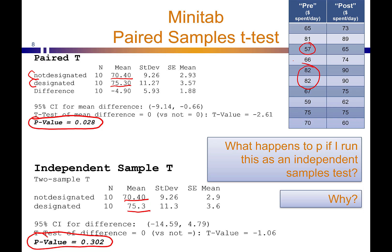With a paired t-test, because you're taking the differences — for example, $57 to $65 is an $8 change, $82 to $90 is another $8 change, $70 to $60 is a minus $10 change — the only variability you're incorporating is the change from being a non-super shopper to a super shopper. The variability between individuals spending in the $80 range versus the $60 range is isolated away and not part of your test statistic. Therefore you have a stronger test statistic and a lower p-value, even though the mean values are the same.